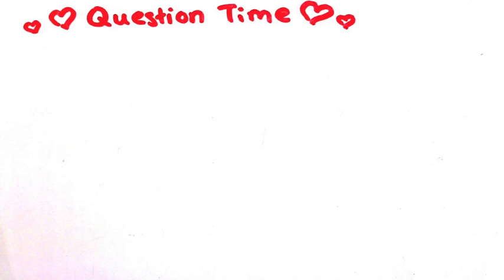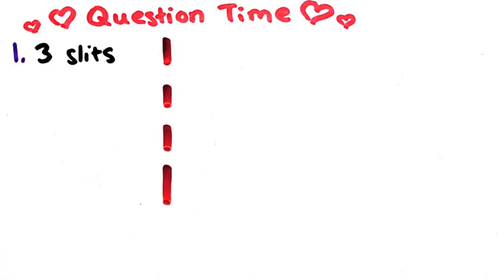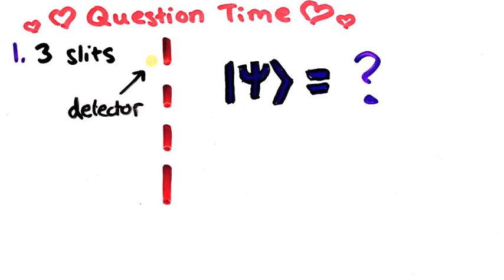And so, it's question time. First, what if there are three slits and you only have a detector at one? What does the wavefunction of a particle that goes through look like before and after?